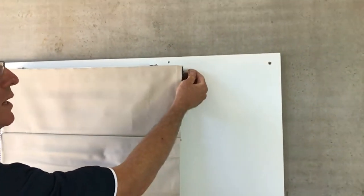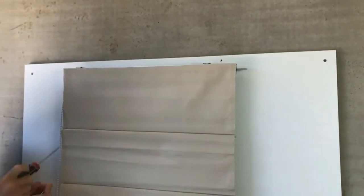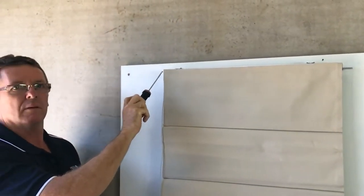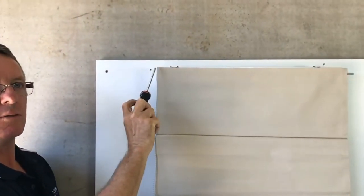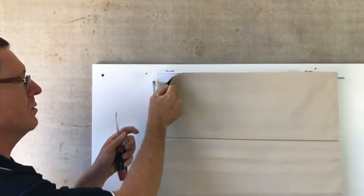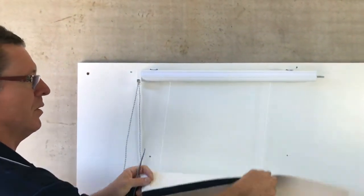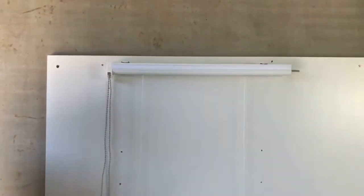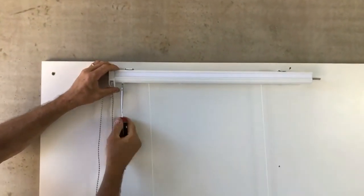This allows the bar to come out and away from the control unit. So all we're going to do is peel the fabric off again. In this instance, we can do it while the blind is in place.